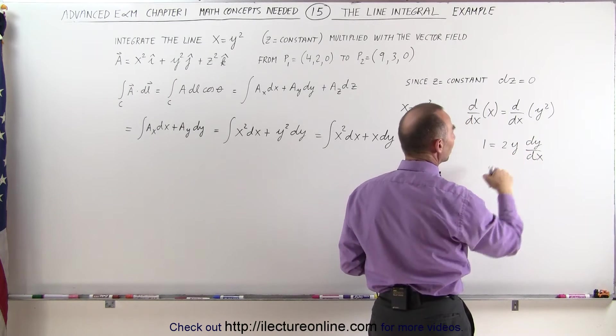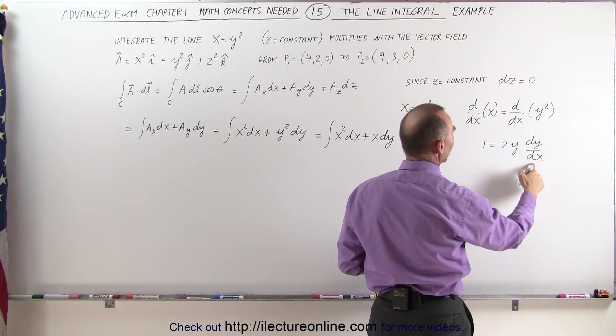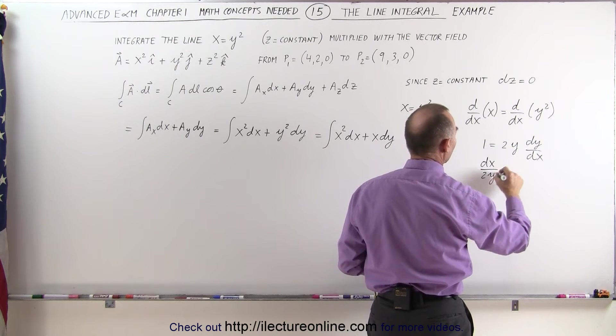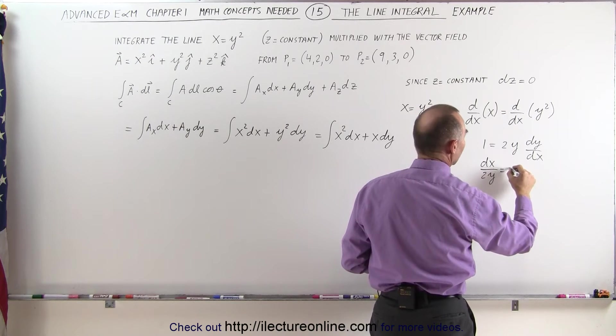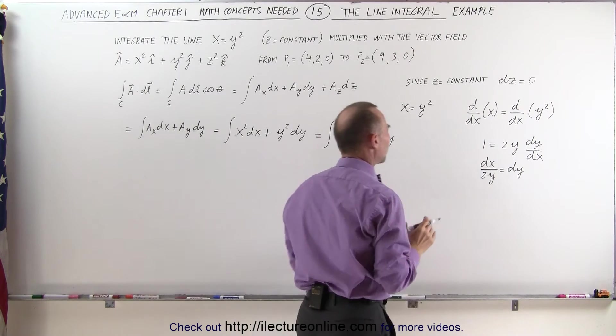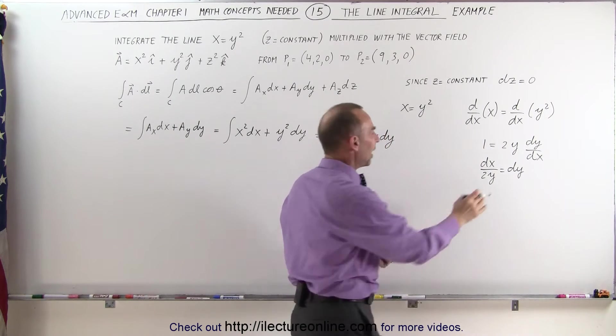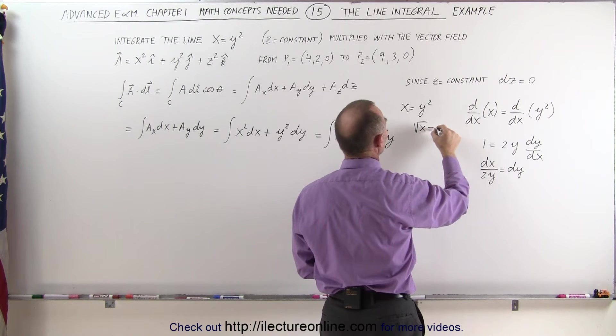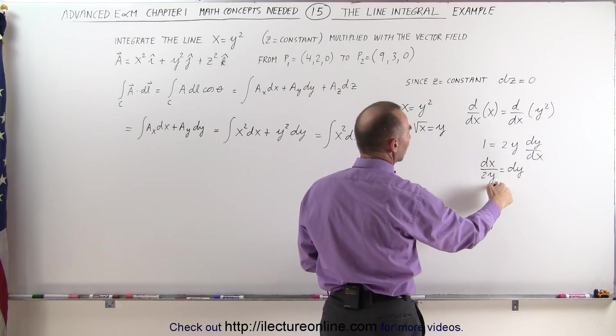Which means, if we solve this for dy, we can say the dx goes over here, the 2y goes over here, so dx divided by 2y equals dy. So now we can replace dy by dx over 2y, but we don't want a y there, so when we take the square root of both sides here, we can say that the square root of x equals y, so this can be plugged in here.